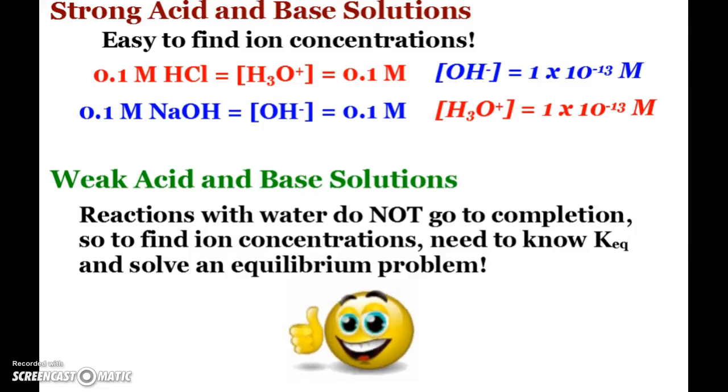So now we are going to venture into the weak acid and base situations. We looked at strong acids and bases and the nice thing about our six strong acids and six strong bases, it's very easy to find ion concentration. So if I have a 0.1 molar hydrochloric acid solution that means my hydronium concentration is 0.1 molar. And of course I can use KW in an effort to find hydroxide.